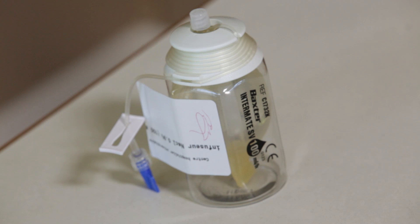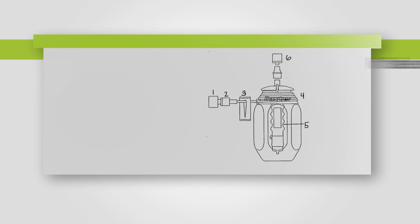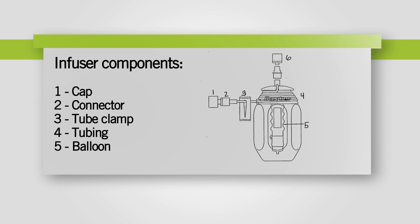The Intermate infuser, also referred to as the baby bottle, is an elastomeric reservoir that contains your antibiotics. It operates with pressure, which allows the medication to flow freely through the tubing. The different infuser components are cap, connector tube,